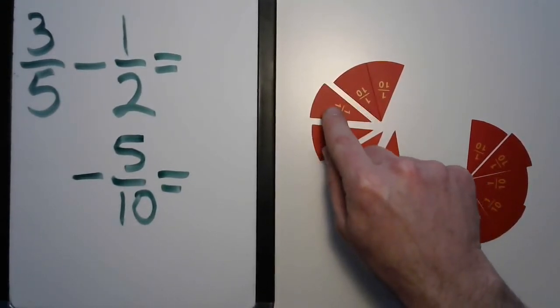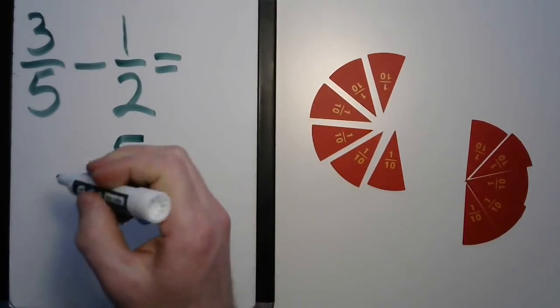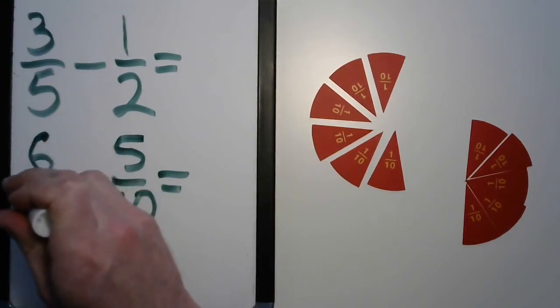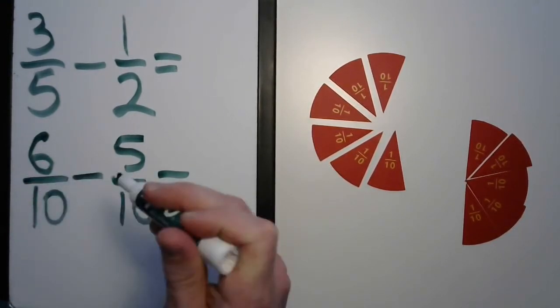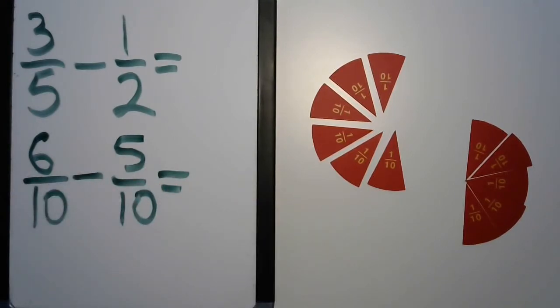One, two, three, four, five, six tenths. You probably already knew that. So now we can see our problem is much easier. We can solve this in our heads very easily. Six tenths minus five tenths.